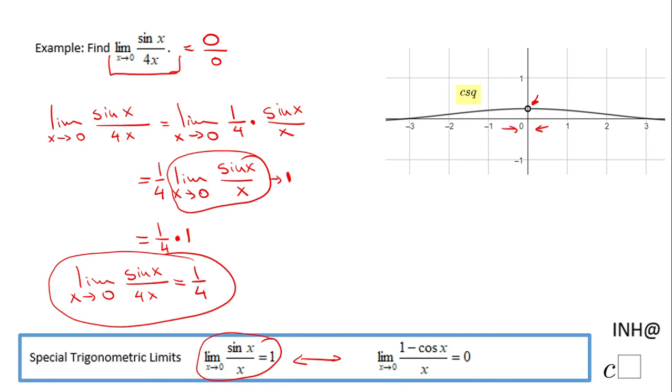Of course on the graph it is difficult to see that y value of 1 over 4. You may want to use a numerical approach using the calculator. Be sure that the calculator is in radians and you may get that value.